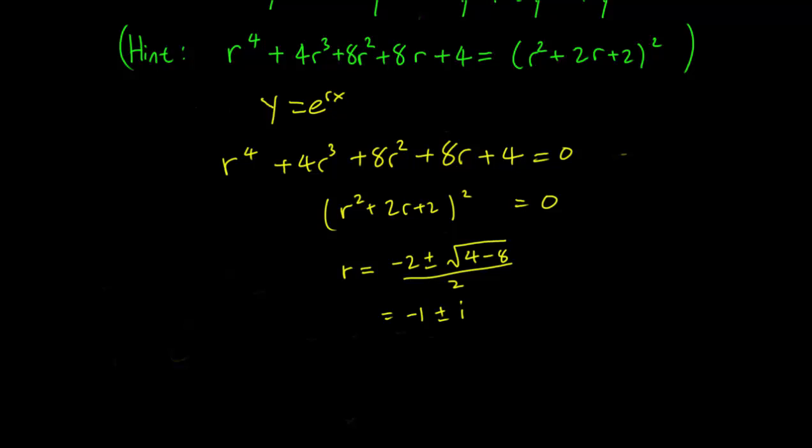So these are the roots of the polynomial in the brackets, but we have the polynomial squared, so our four roots are really r = -1+i, -1-i, -1+i, -1-i.